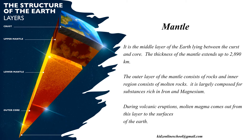The mantle is the middle layer of the Earth lying between the crust and core. The thickness of the mantle extends up to 2,890 km. The outer layer of the mantle consists of rocks and the inner region consists of molten rocks. It is largely composed of substances rich in iron and magnesium. During volcanic eruptions, molten magma comes out from this layer to the surface of the Earth.